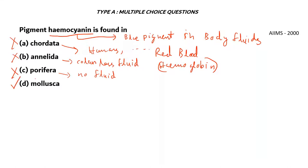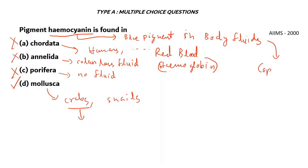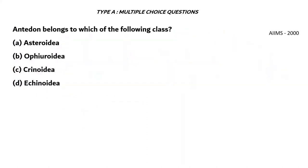The right answer is option D, mollusca. This includes crabs, snails, etc. A particular kind known as the horseshoe crab is now popular for harvesting blue blood, which contains hemocyanin. Hemocyanin is specialized by having copper in the pigment, while hemoglobin has iron.